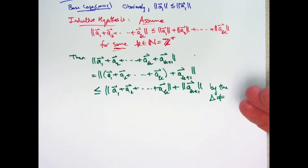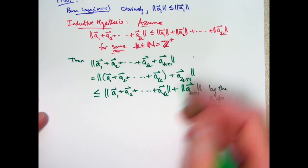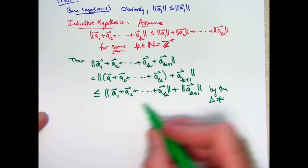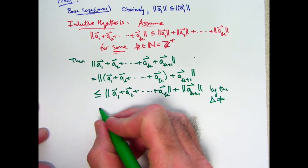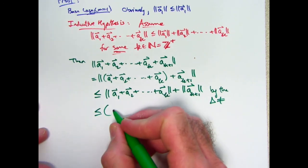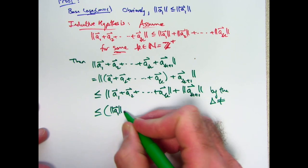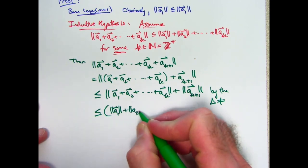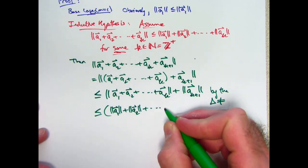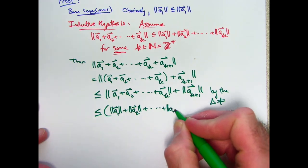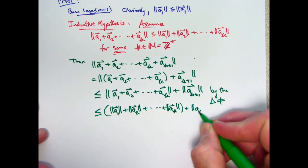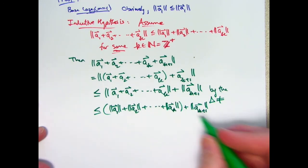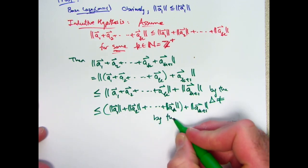When you use induction, you have to use your inductive hypothesis somewhere, otherwise you wouldn't use induction. Now we can use this inductive hypothesis to say this part is less than or equal to that, which basically brings us to the end. Maybe for extra emphasis we use parentheses again. Not that you really have to. The associative property is often considered so obvious that we don't have to mention it. Technically it should be mentioned, but we get a little sloppy sometimes. For extra emphasis, this is by the inductive hypothesis.